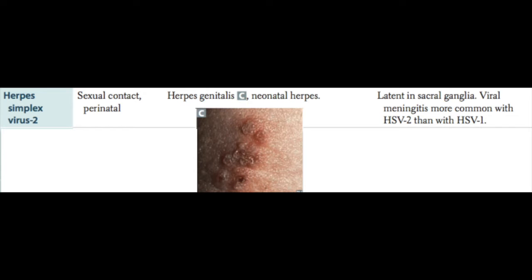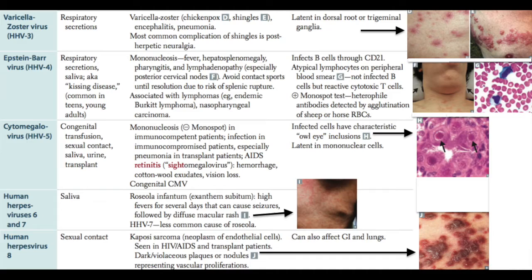HSV2 is most commonly associated with herpes genitalis and neonatal herpes, which babies can acquire passing through the birth canal. Transmission is sexual contact and perinatal. VZV causes varicella zoster or shingles, encephalitis, and pneumonia, and is transmitted through respiratory secretions. A great mnemonic for remembering the herpes viruses is CHEV — CMV, HSV, EBV, and VZV.